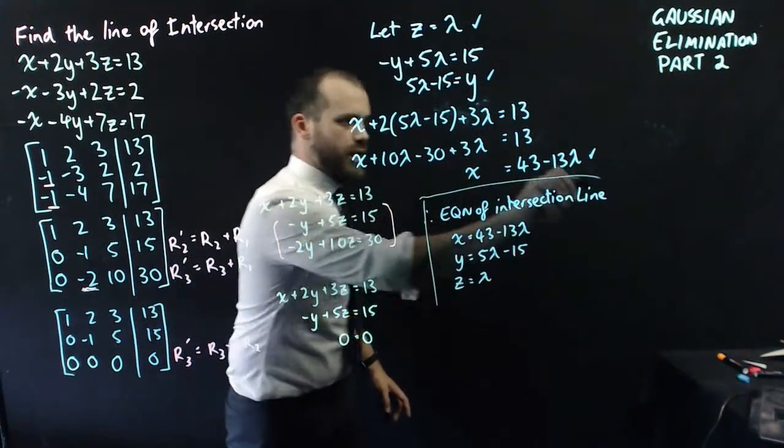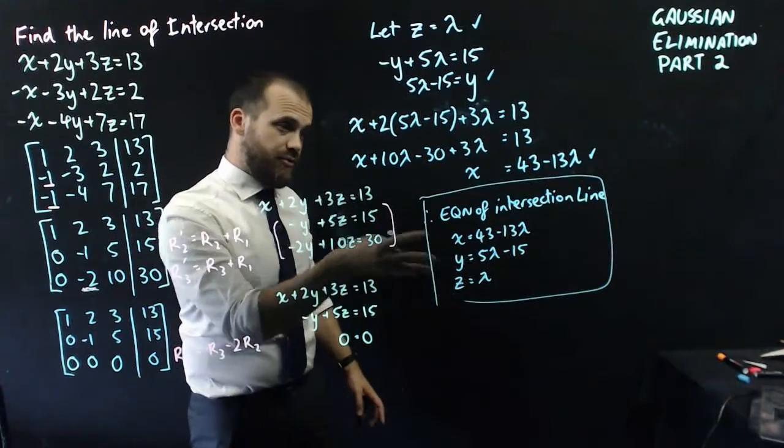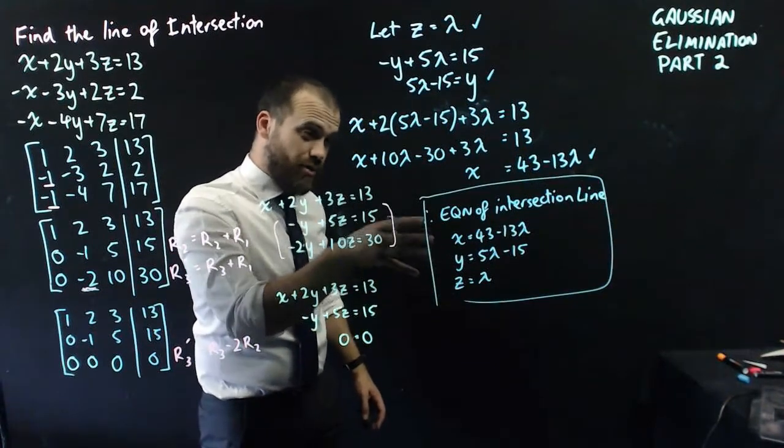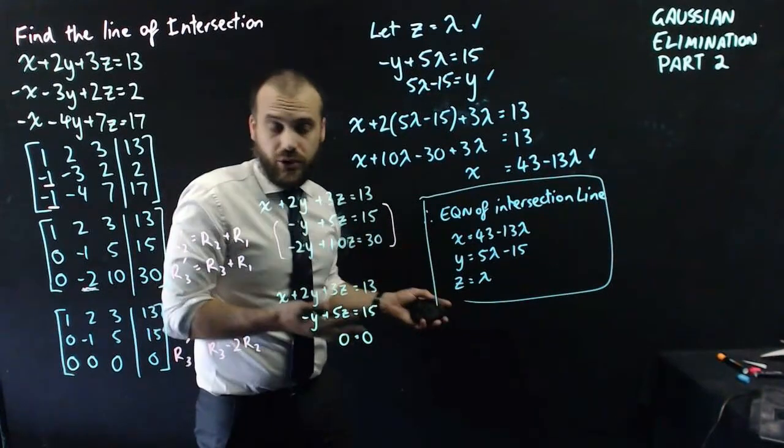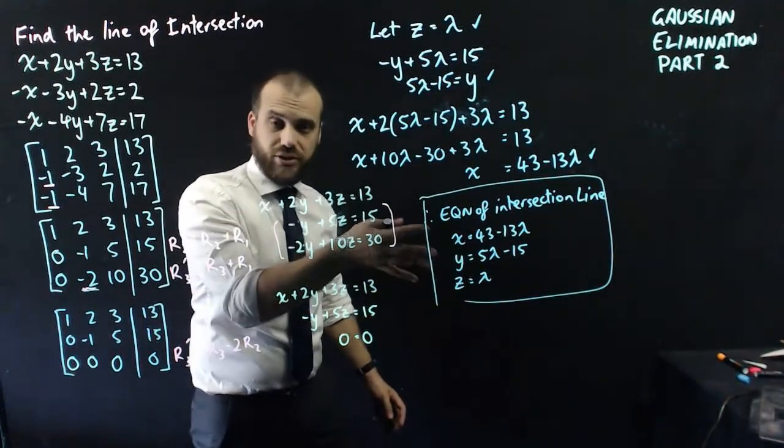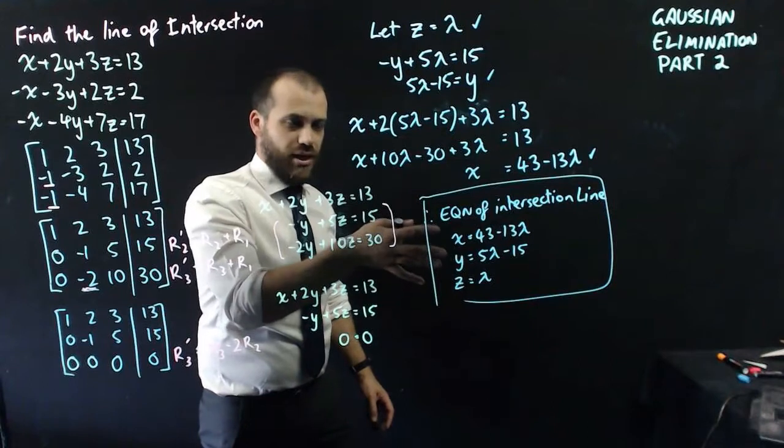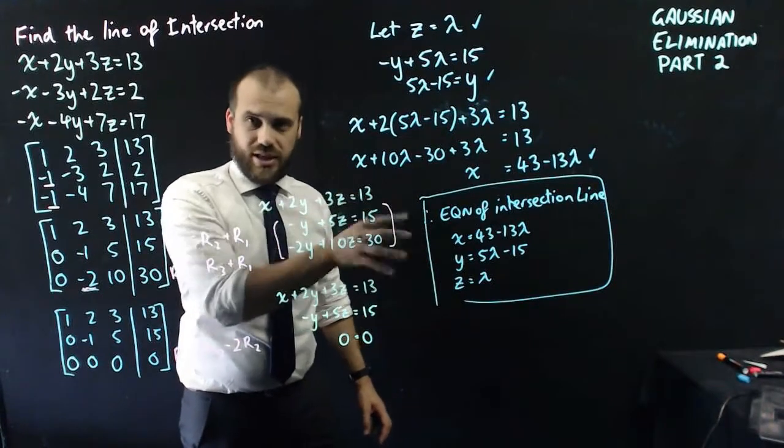So we finish it all off by saying the equation of the intersection line is given by these parametric equations. Now you could, if you wanted to, convert this to a vector equation, but I'm going to leave it there as just parametric equations. That's enough for this one.